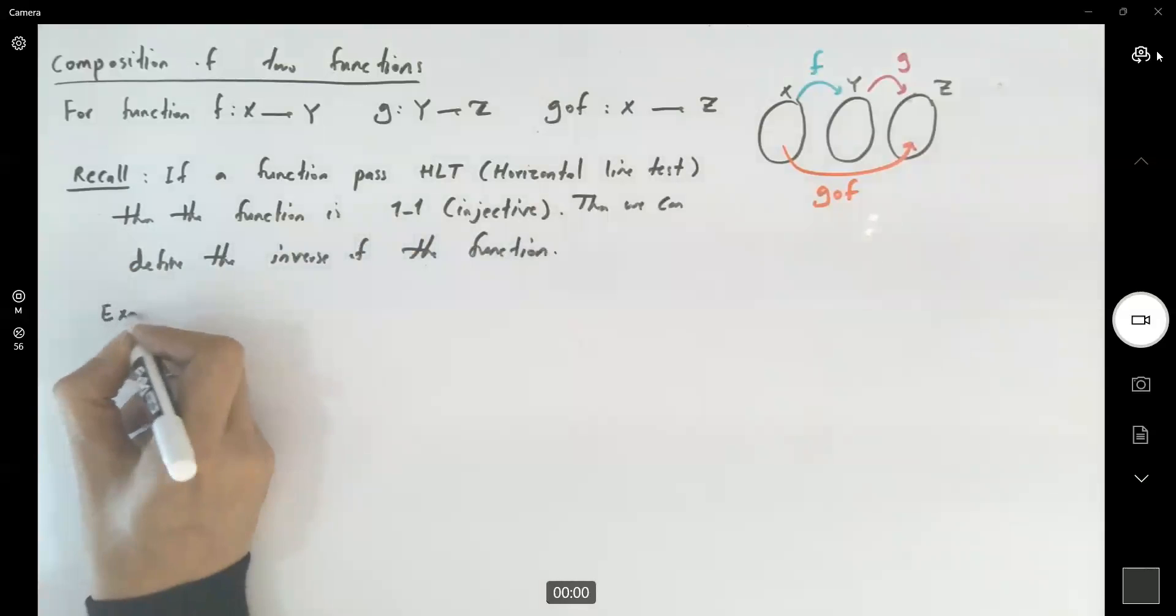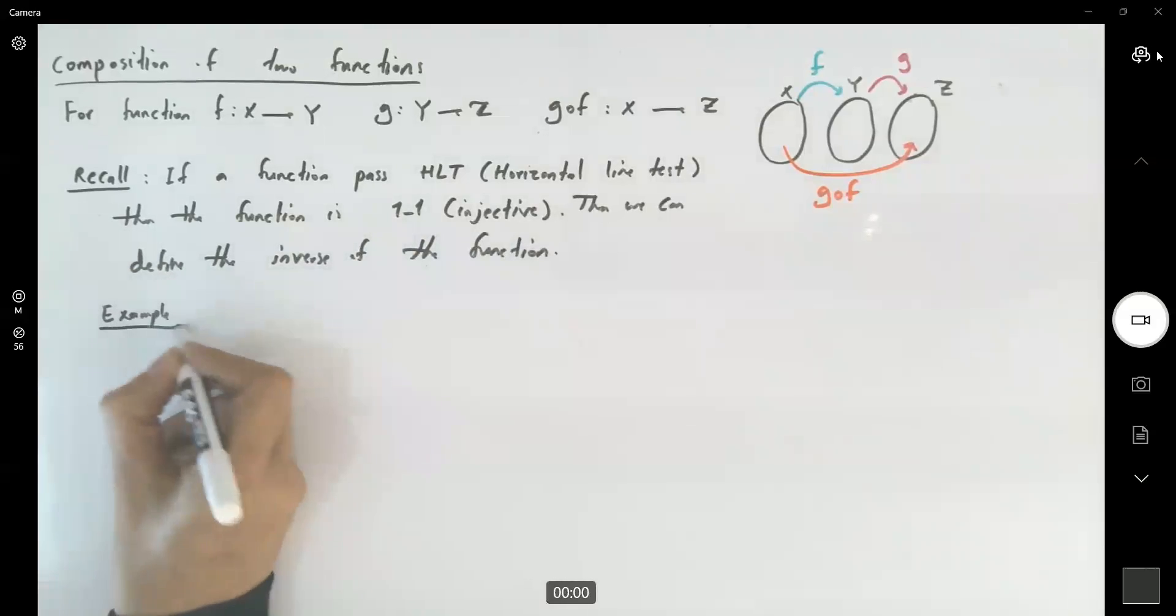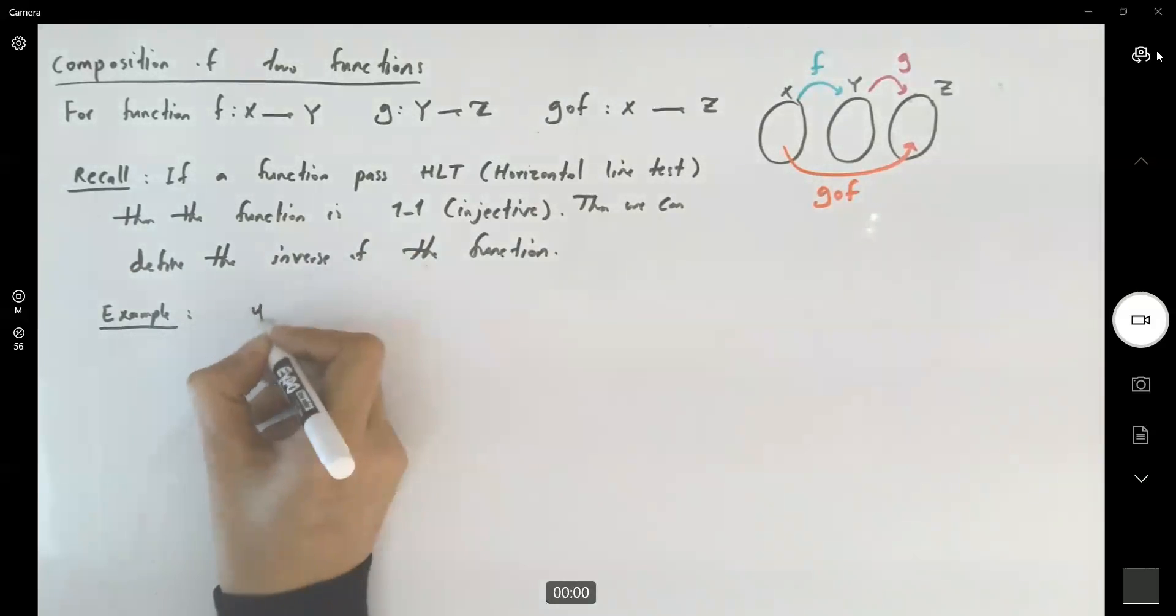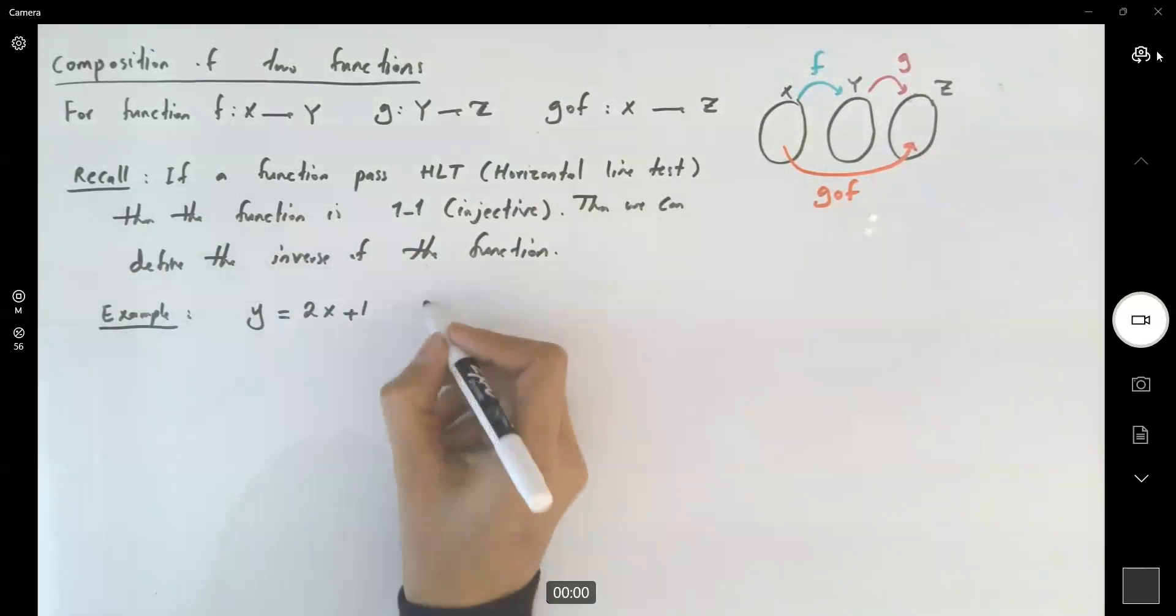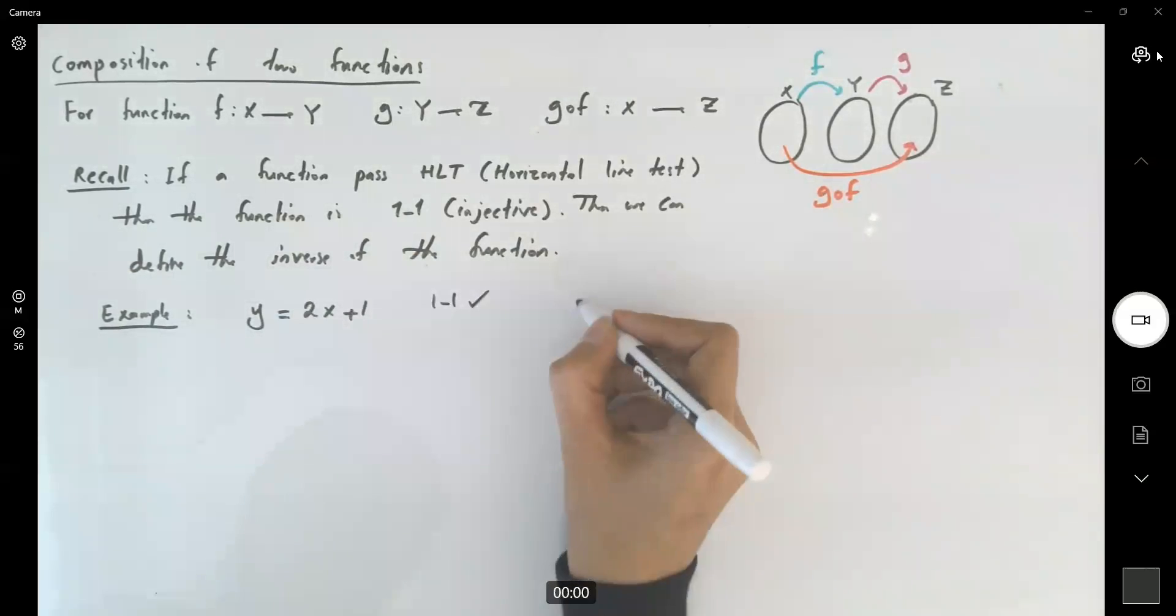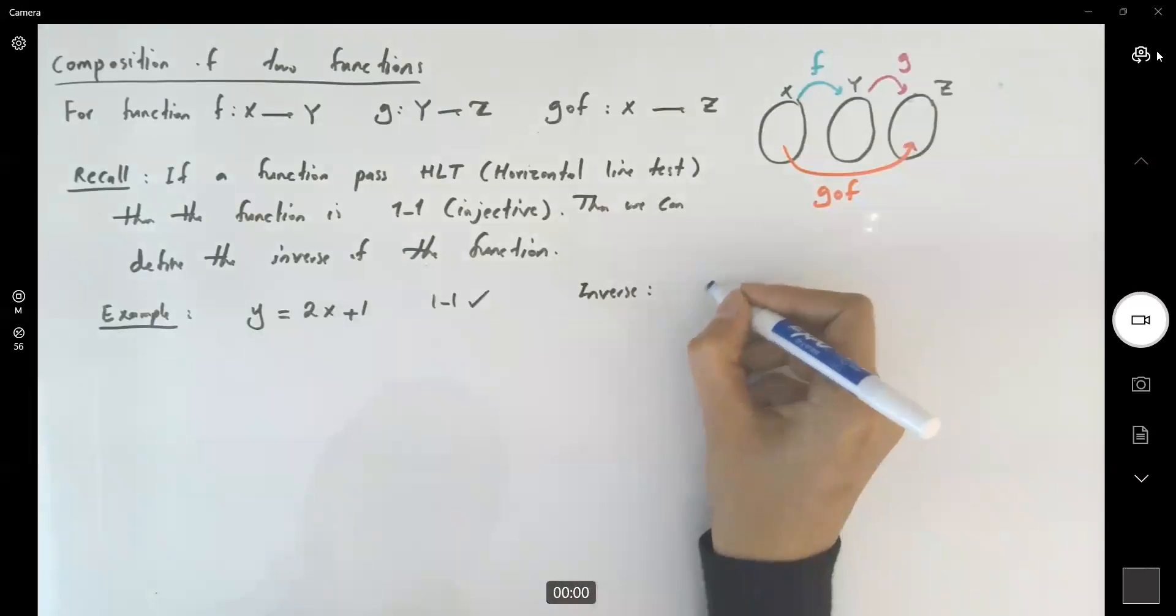For example, going back to intermediate algebra and pre-calculus, if you have a function y equals 2x plus 1, of course it's a one-to-one function, it's just a line. To find the inverse, what are you going to do? You're going to switch x and y.